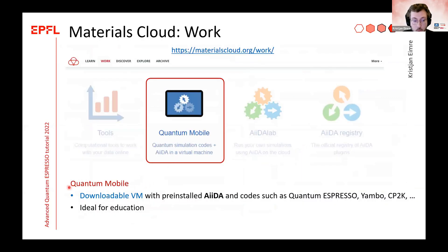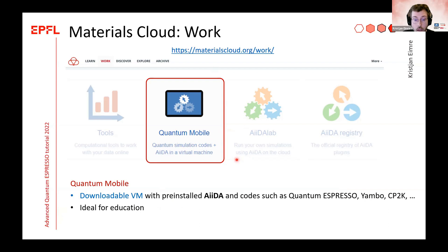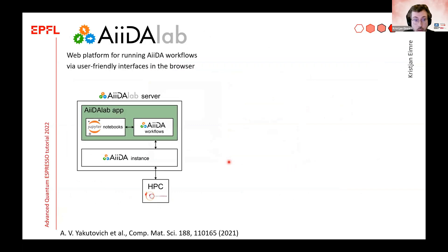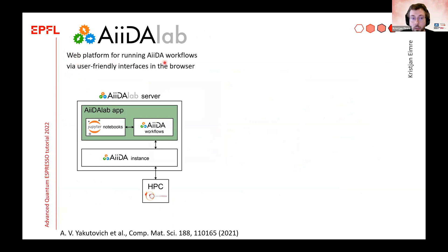The next part of the Work section is Quantum Mobile, a downloadable virtual machine image with AiiDA and many software codes installed — ideal for education and tutorials like this one. The last part of the Work section is AiiDA Lab, which I will now go into in more detail. In a single sentence: AiiDA Lab is a web platform for running AiiDA workflows via user-friendly interfaces in the browser.